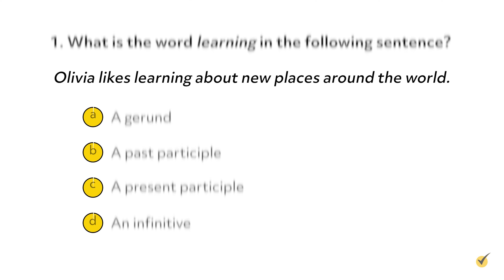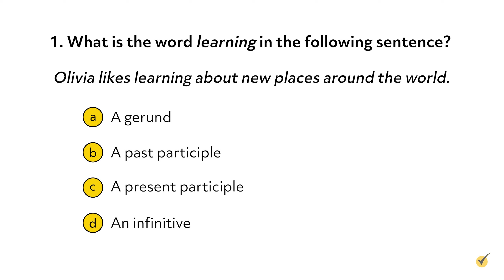Okay, to wrap things up, let's go over a few review questions. Number one: what is the word 'learning' in the following sentence? 'Olivia likes learning about new places around the world.' A) a gerund, B) a past participle, C) a present participle, or D) an infinitive. The correct answer is A. The verb 'learning' ends in -ing and is acting as a noun, so we know that it must be a gerund.